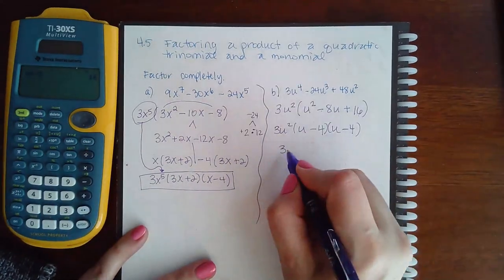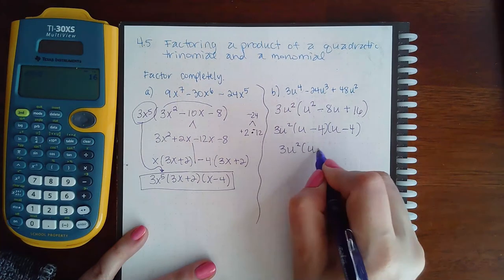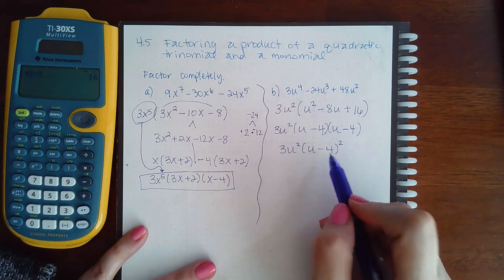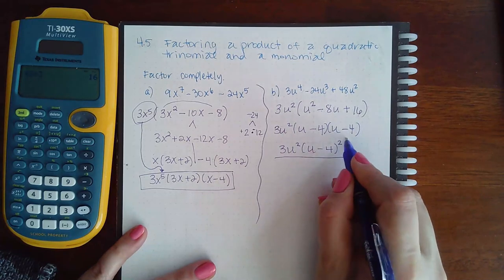So u minus 4, or I could rewrite that as u minus 4 squared since it's the same thing repeating twice, and that's the definition of a square.